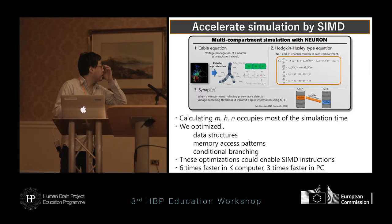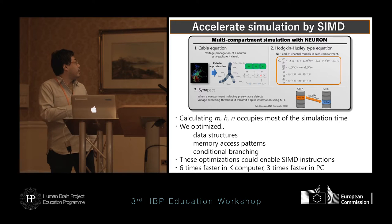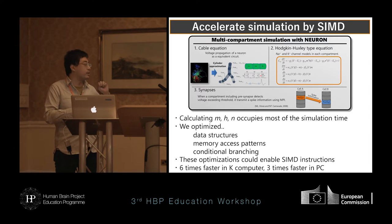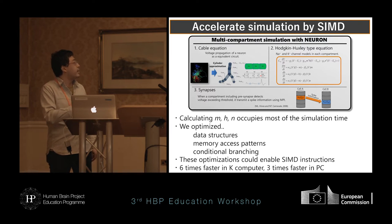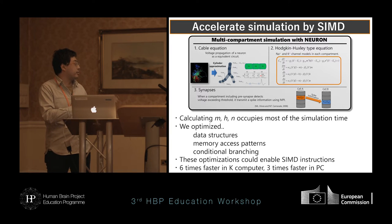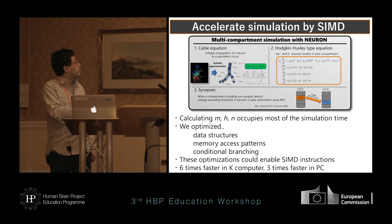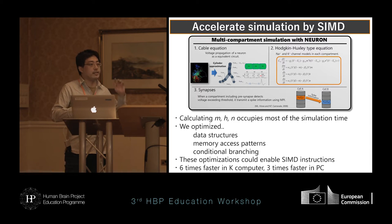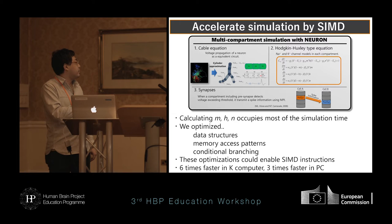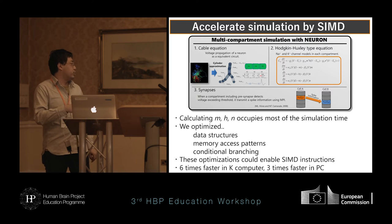This is our model. It is a multi-compartmental Hodgkin-Huxley type model simulation, and we are using the NEURON simulator. This model has two parts of computational cost. The first part is the cable equation, which calculates propagation of voltage as a usual electrical circuit. The second part is the Hodgkin-Huxley type equation, which calculates dynamics of each channel in each compartment. In our measurement and estimation, this equation occupies most of the simulation — especially the m, h, n rate functions are the main part.